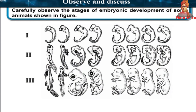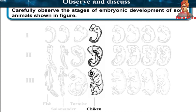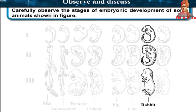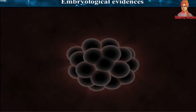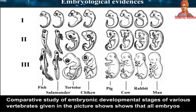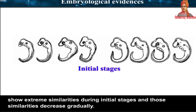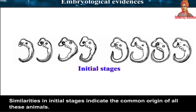Embryological Evidences: Observe the stages of embryonic development of some animals — fish, salamander, tortoise, chicken, pig, cow, rabbit, and man. Comparative study of embryonic developmental stages of various vertebrates shows that all embryos show extreme similarities during initial stages, and those similarities decrease gradually. Similarities in initial stages indicate the common origin of all these animals.